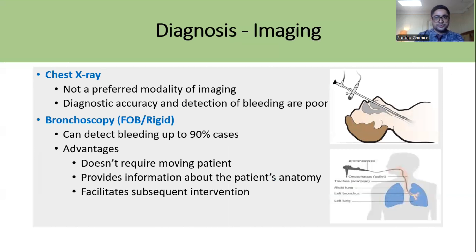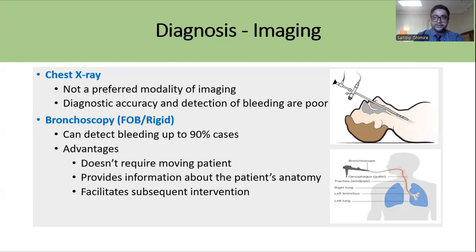After initial stabilization, we can proceed with imaging studies. Chest X-ray is usually not a preferred modality because it has very poor diagnostic accuracy for detecting the site of bleeding. One of the preferred investigations is bronchoscopy — either rigid or fiber optic — which can detect up to 90% of bleeding cases. The advantage of bronchoscopy is that it does not require moving the patient; it can be performed in the ED, provides anatomical information, and can facilitate subsequent intervention.